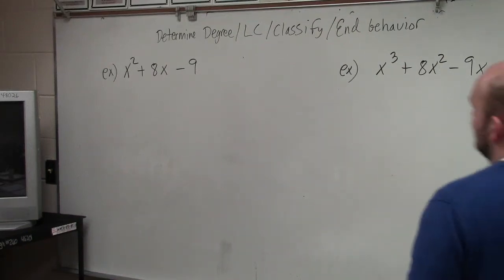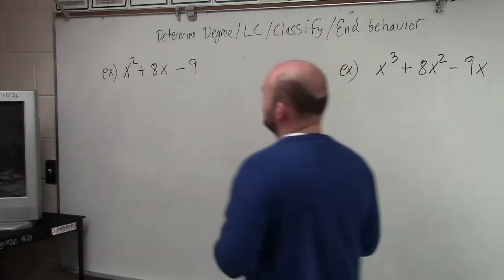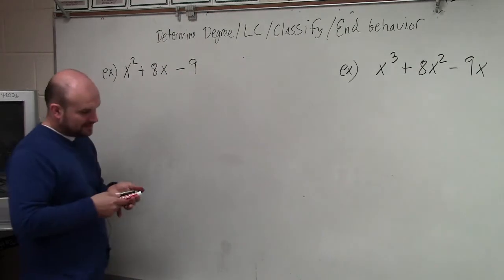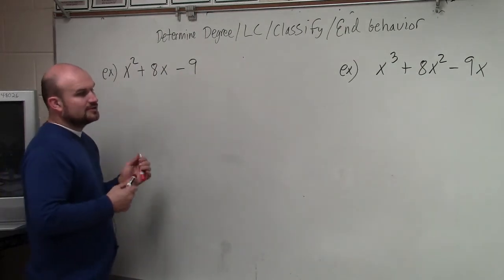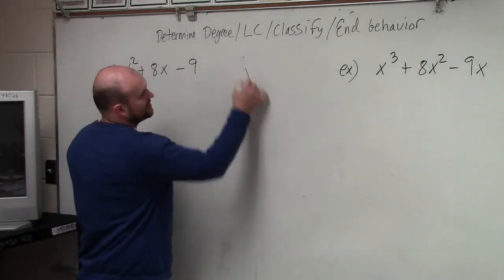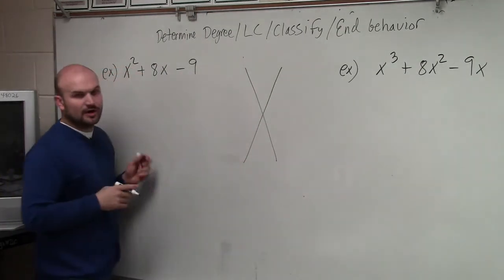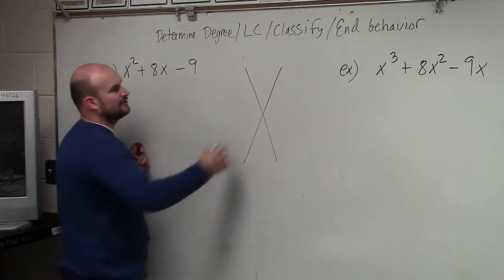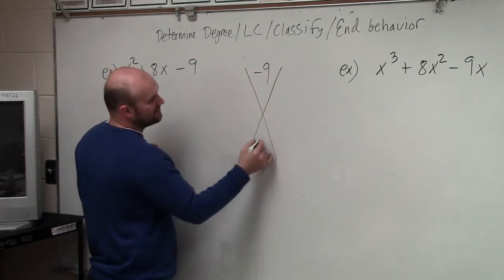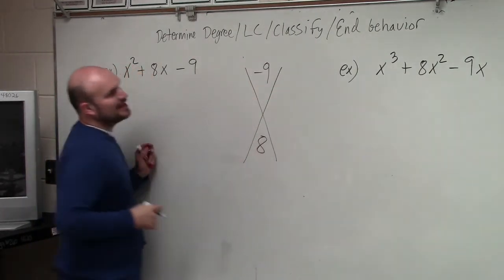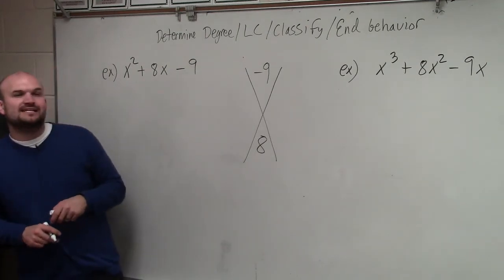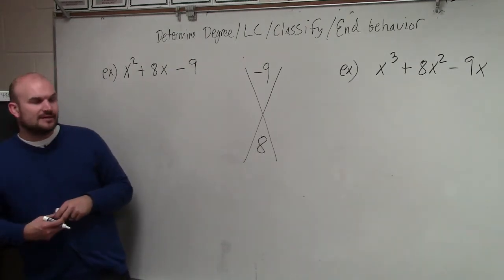So in this case, ladies and gentlemen, what we're trying to identify is we're trying to factor this. When trying to factor this, basically as we talked about with my method that we have gone over again and again, you're trying to identify what two numbers multiply to give you negative 9 and add to give you positive 8.